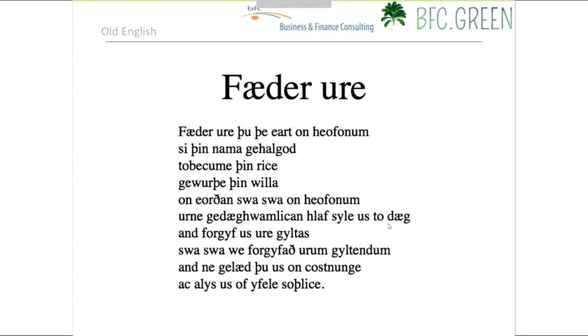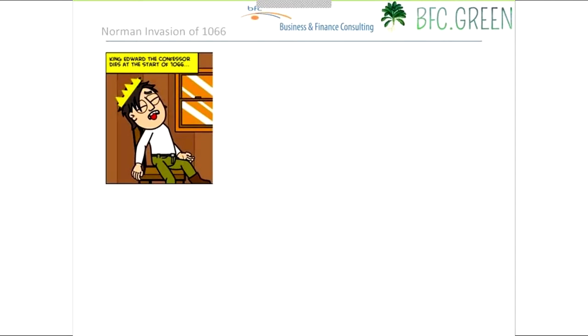English evolved into the Middle English period largely because of the Norman invasion in 1066. On January 5th of that year, King Edward the Confessor died without clear heirs. Harold Godwinson became king but faced three challengers: his brother Tostig Godwinson, the King of Norway, and William the Duke of Normandy. Harold defeated the first two at the Battle of Stamford Bridge on September 20th, 1066.